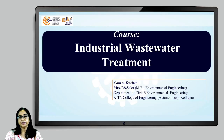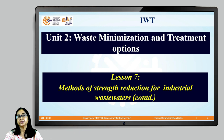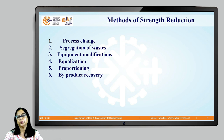Hello dear students, once again welcome to another lecture of the course Industrial Wastewater Treatment. In the last lecture we talked about three methods of strength reduction, and today we will discuss the remaining methods of strength reduction for wastewater in industry. The first three methods we discussed were process change, segregation of waste, and equipment modification.